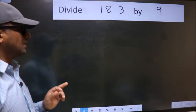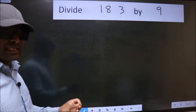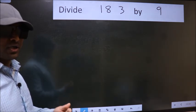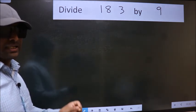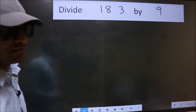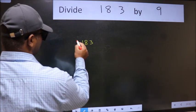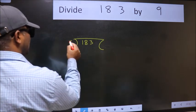Divide 183 by 9. While doing this division, many do this mistake. What is the mistake that they do? I will let you know. But before that, we should frame it in this way. 183 here, 9 here.